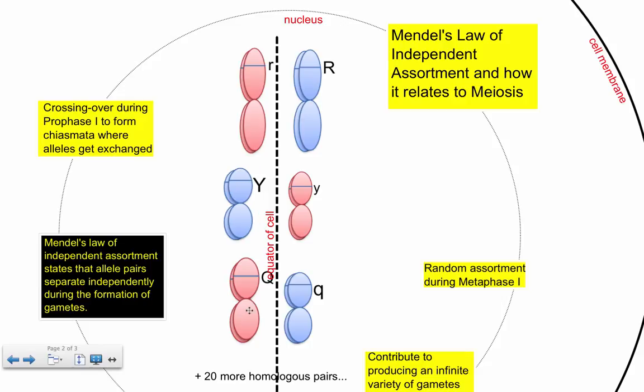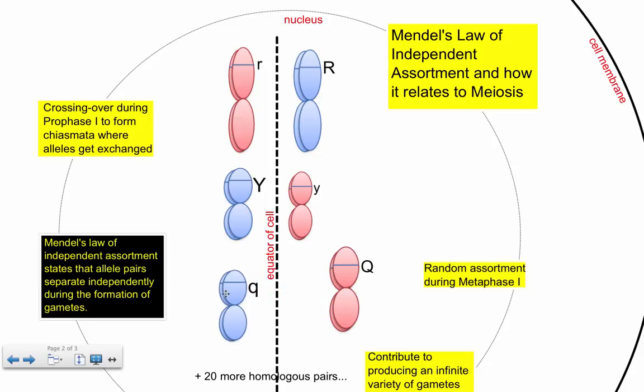So look at this specific combination. I could end up with a gamete here that has little r, big Y, big Q and one with big R, little y, little q. Just by flipping this around I've created a new gamete, little r, big Y, little q.